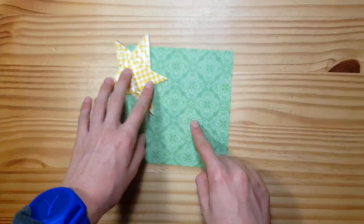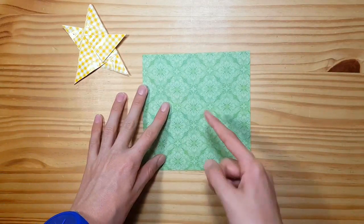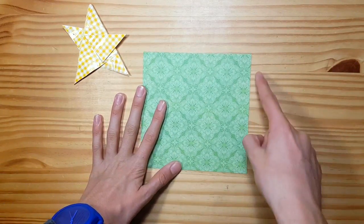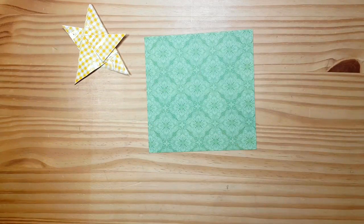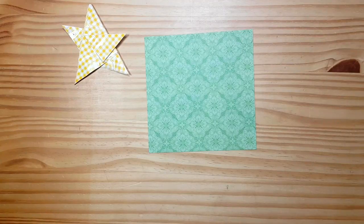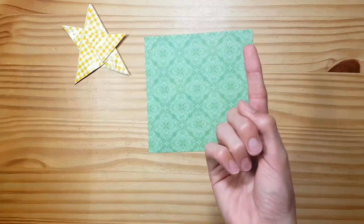To make this star you need one origami paper, 15 by 15 cm type. So what we should do is easier than easy. Get started from step 1.